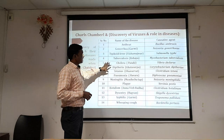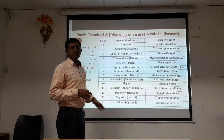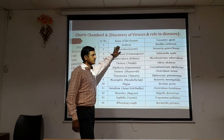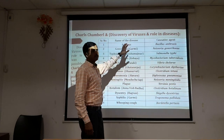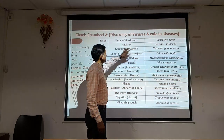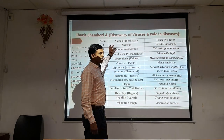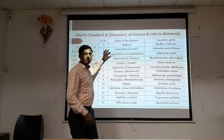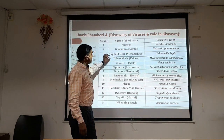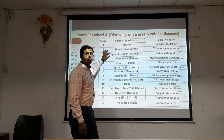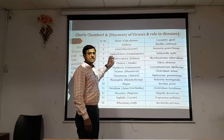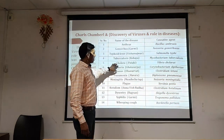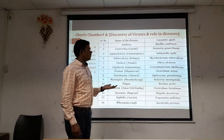In this chart we can see different pathogens and the diseases they cause. Anthrax is caused by Bacillus anthracis. Gonorrhea is caused by Neisseria gonorrhoeae. Typhoid fever is caused by Salmonella typhi. Tuberculosis is caused by Mycobacterium tuberculosis. Cholera is caused by Vibrio cholerae.